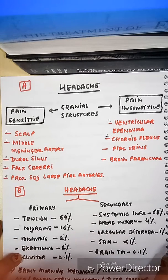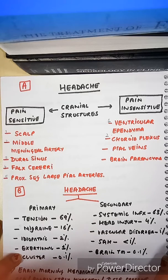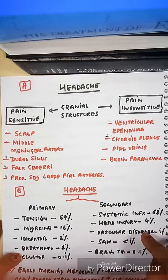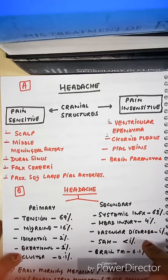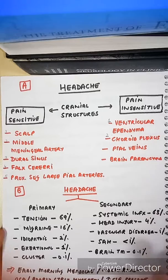The commonest type of secondary headache is systemic infections, corresponding to 63% of cases. Other causes include head injuries at 4%, vascular disorders, subarachnoid hemorrhage, and brain tumors.